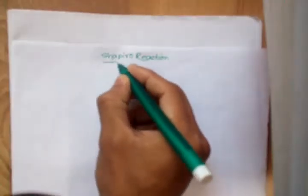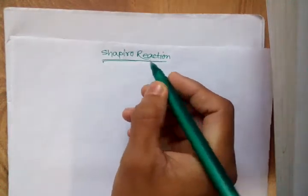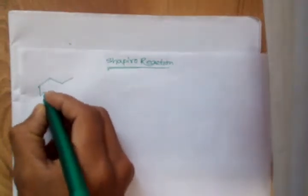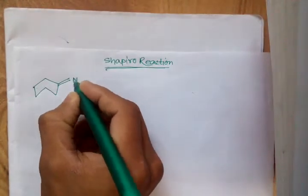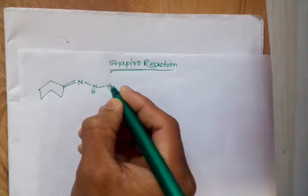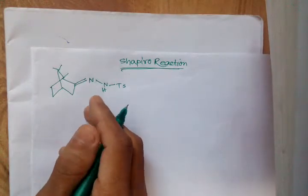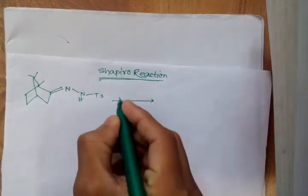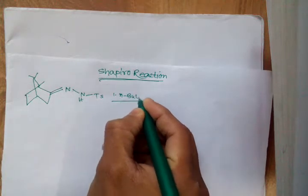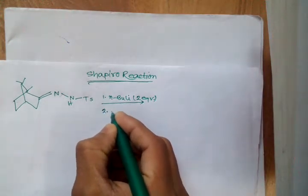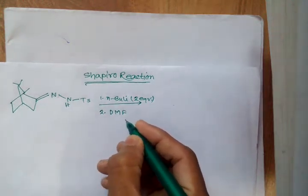Hello friends, today I am going to solve a problem based on the Shapiro reaction. It is a special type of reaction used in synthetic analysis of organic chemistry. Here is a problem: a bicyclic tosyl hydrazone, when treated with 2 equivalents of N-butyl lithium followed by dimethylformamide — what is the product?